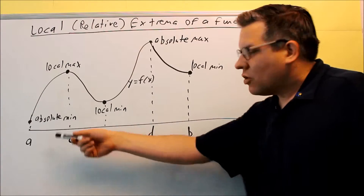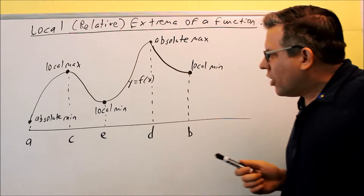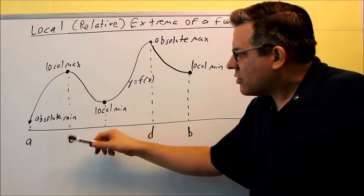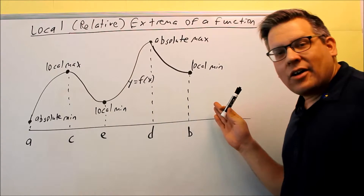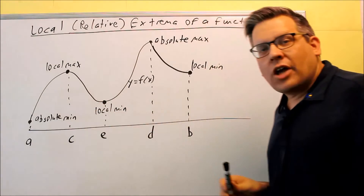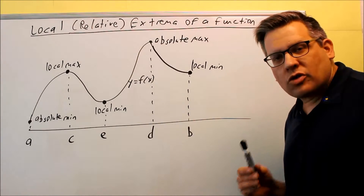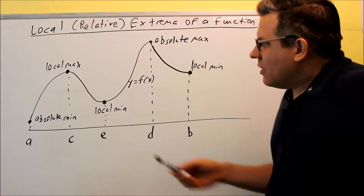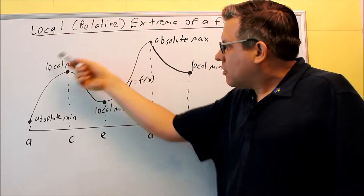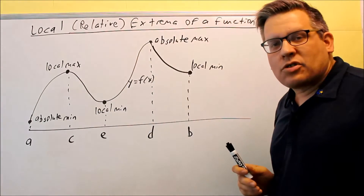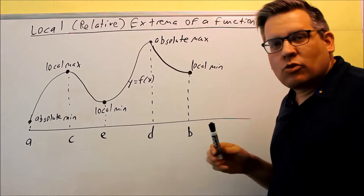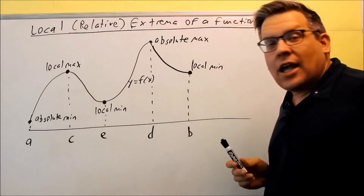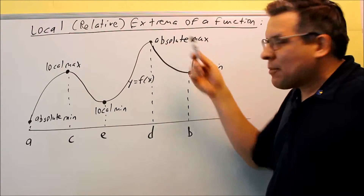I've got these different points labeled, so let's take a look at each one. The first one at a is an absolute min, because it's the lowest point on the entire interval — there's no other y value lower than that point, so that's considered the absolute minimum of the entire graph on that interval. The absolute max would be the highest point on the entire interval, with no other y value higher between a and b. So at d, that's an absolute max.